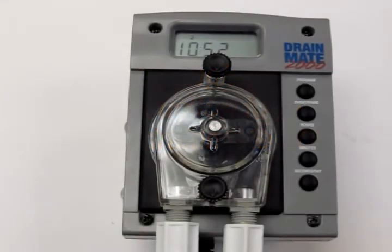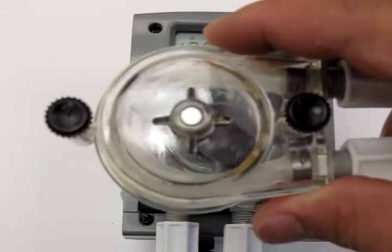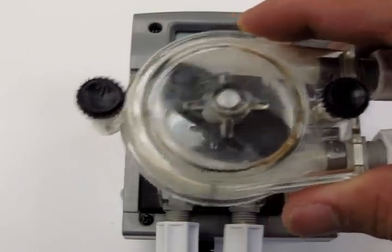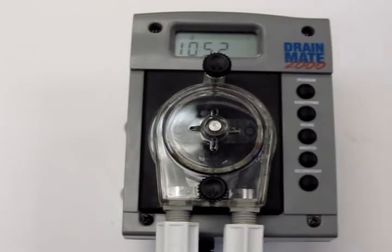Today I'm going to show you how to change the tubing on your Drainmate 2000. Currently, we have Viaton, additionally we have silicone, and we also have an acid-resistant tubing as well.